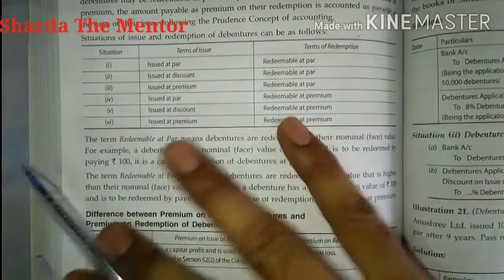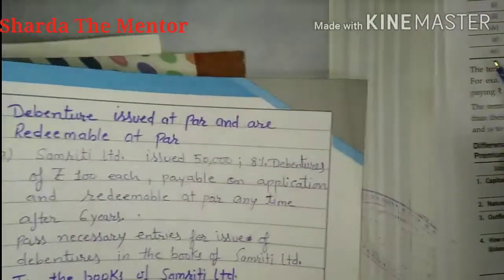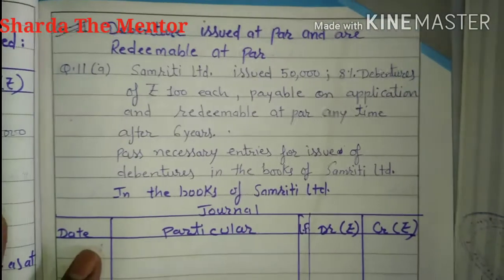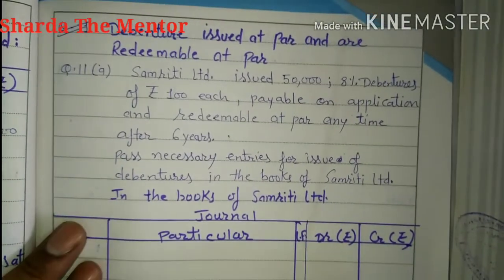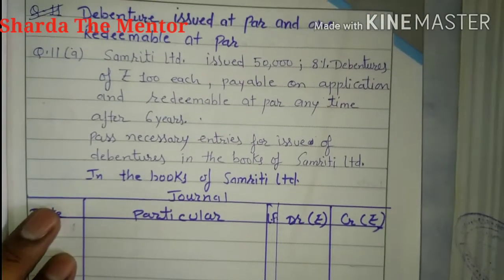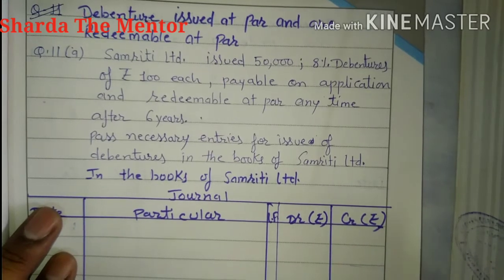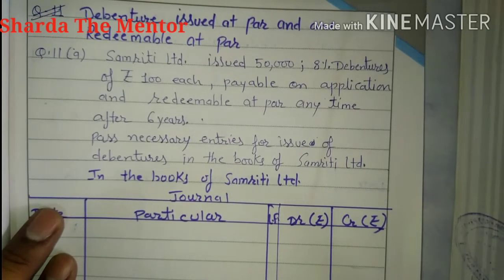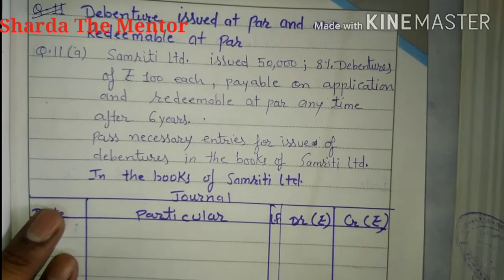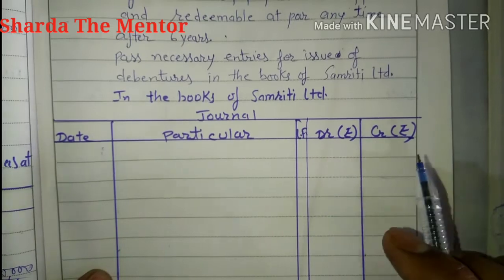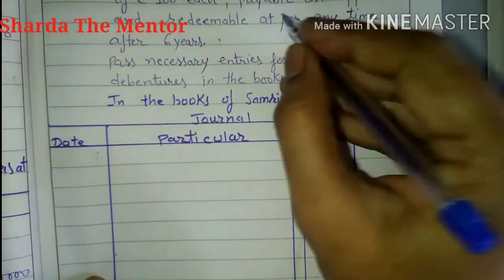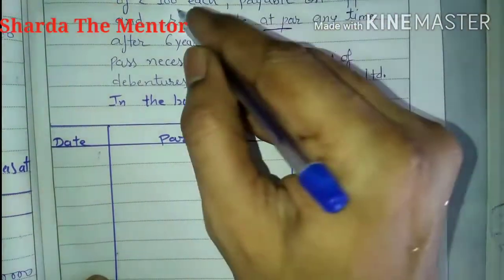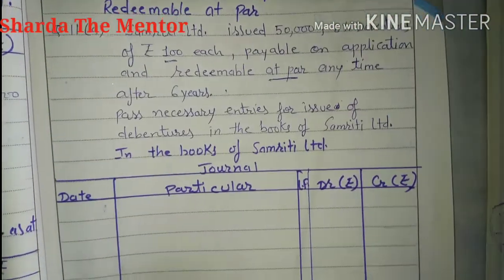These are the three conditions we will cover here. The first condition is the simplest — we already did some questions on this basis in an earlier video. Samritti Limited issued 50,000 8% debentures of 100 each, payable on application and redeemable at par anytime after six years. Since debentures are redeemed at par, no difference will arise.